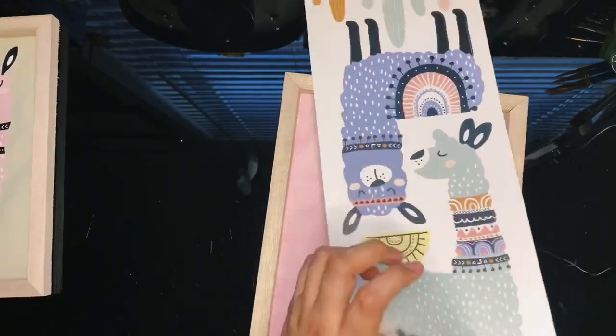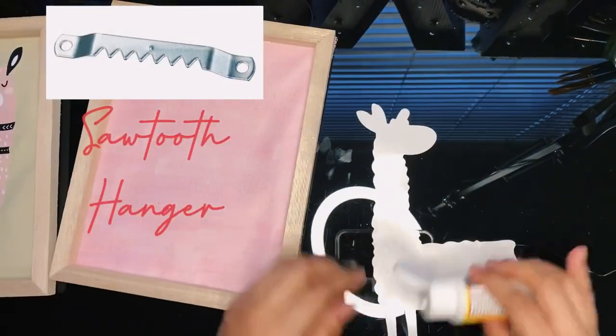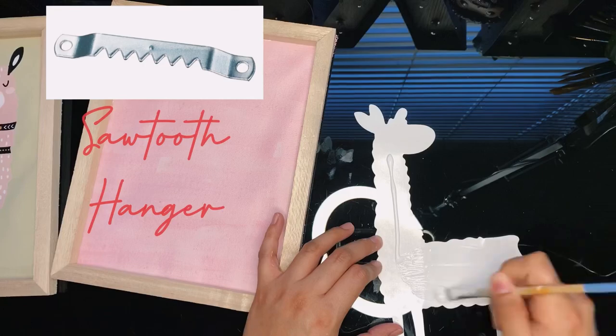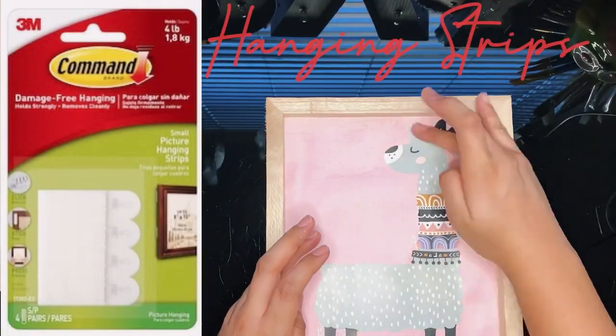To hang your artwork, you can hot glue a sawtooth hanger with a hot glue gun, since these canvases aren't heavy. Or you can also use hanging strips that won't damage your wall.